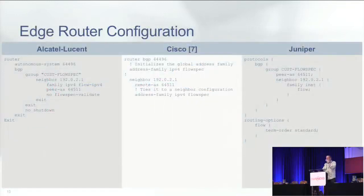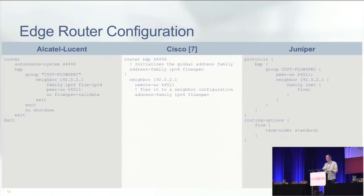What do the configurations look like? Again, this is not something only one vendor supports. I have three examples — not an exhaustive list. For the scenario where you're receiving BGP flow spec routes from a customer, all you really do is turn on the flow spec NLRI that's been added to BGP. It's fairly straightforward from that perspective.